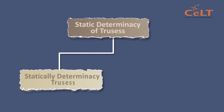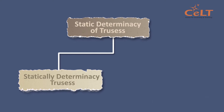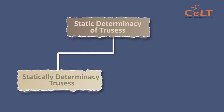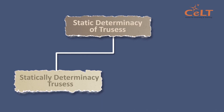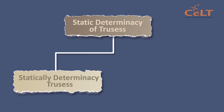A truss is considered statically determinate when the static equilibrium equations can be used to find the reactions on the structure. Only statically determinate trusses can be analysed with the method of joints and method of sections.